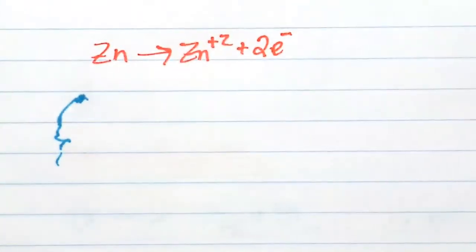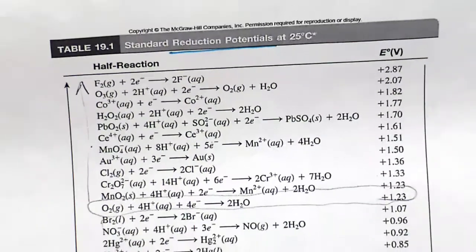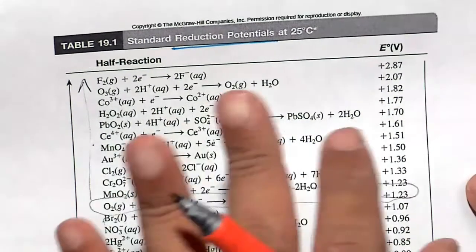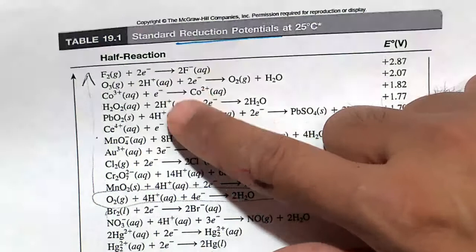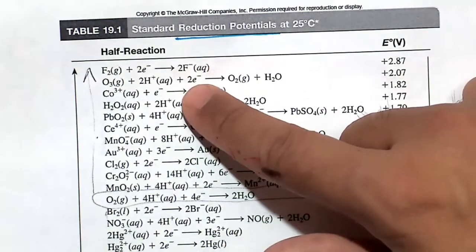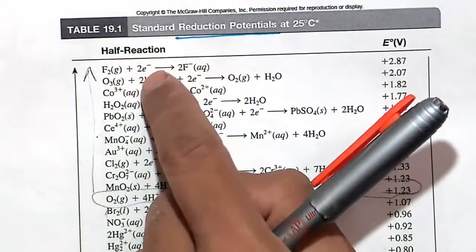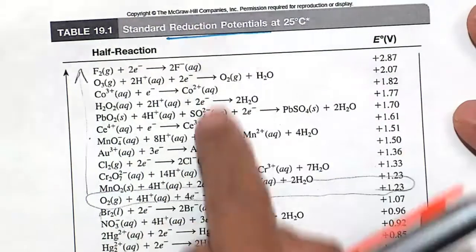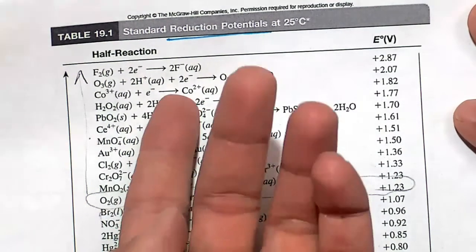Let's check the voltage of zinc going to zinc plus two. Realize that all of these are reduction half reactions gaining electrons. If you want the oxidation version of these half reactions, you flip the sign. All of these represent cathodes.